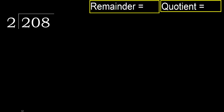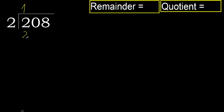208 divided by 2. Let's start with 2. Here, 2 multiplied by which number is nearest to 2 but not greater? 2 multiplied by 2 is 4, which is greater. Multiply by 1 is 2, which is not greater. Subtract, next.